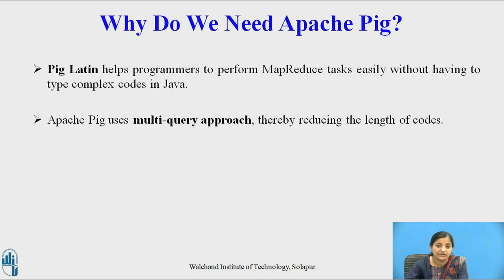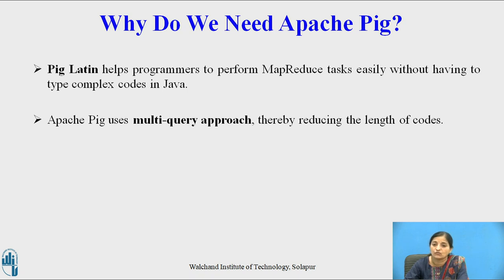Why do we need Apache Pig? Pig Latin helps programmers to perform MapReduce tasks easily without having to type complex programs or codes in Java. Some programmers are not good at Java, and especially when they want to write MapReduce tasks for Hadoop, they find it very difficult. Writing MapReduce tasks in Java takes nearly 200 lines of code, but doing the same task in Apache Pig hardly needs 10 lines of code. So for such programmers, Apache Pig is a boon. It uses a multi-query approach, thereby reducing the length of the code.